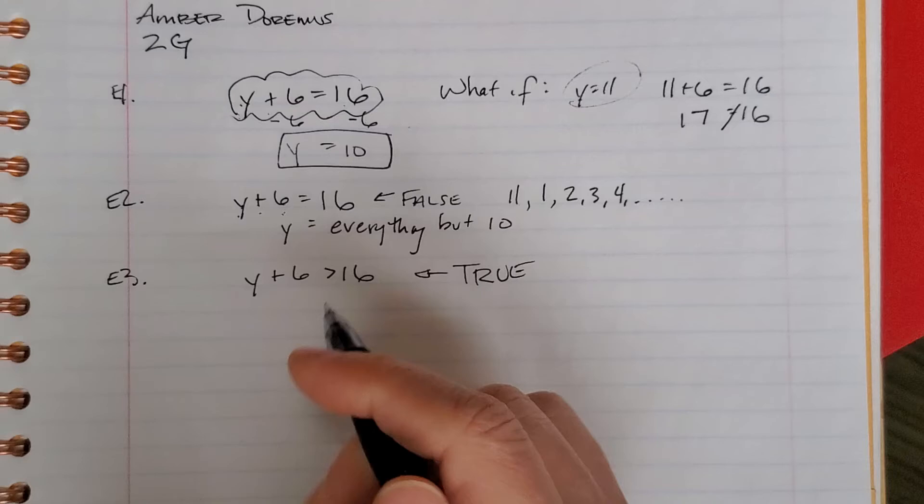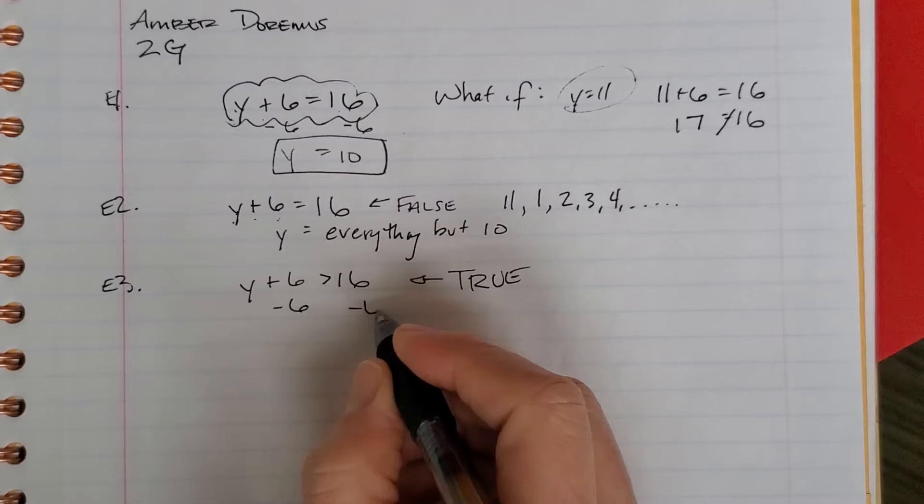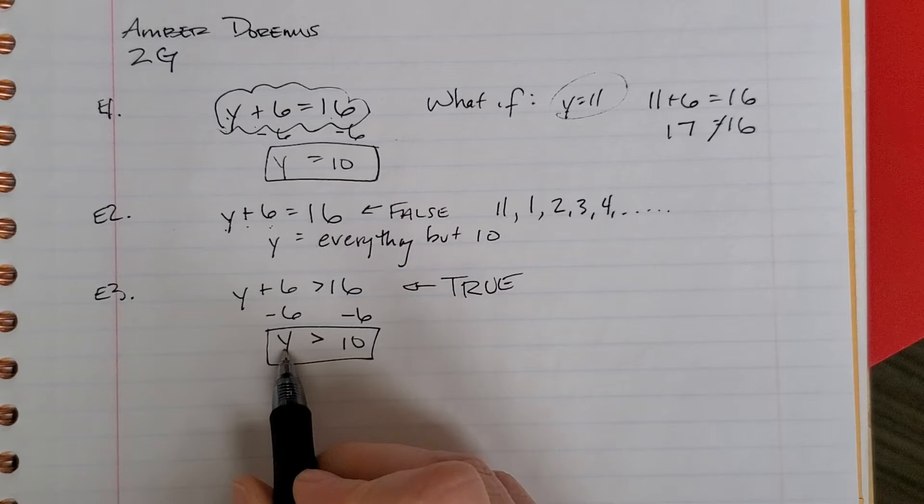Well, let's pretend for right now this is an equal sign. And we'll go ahead and solve it like we know how to do. Do the inverse operation. Keep that symbol the same. Now it says, if y is anything greater than 10, this will be true.